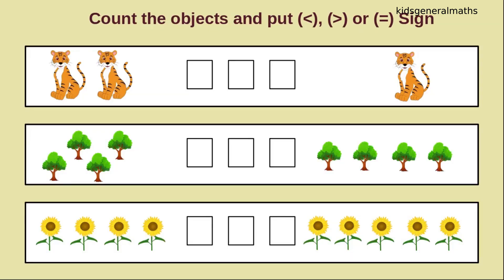Here we are going to count the objects and put the appropriate sign. First we are going to count the first object. One, two. How many tigers? Two tigers. One. How many tigers? One tiger. While comparing these two numbers, which number is greater? Yes, two is greater. So the crocodile will open the mouth towards two. So we will say two is greater than one.